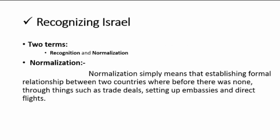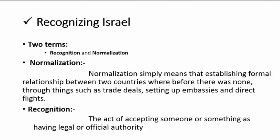Before starting the lecture properly, we have to understand two important terminologies. The first term is normalization. Normalization simply means establishing a formal relationship between two countries where before there was none, through things such as trade deals, setting up embassies, and direct flights. For example, Pakistan and India do not have a relationship with each other, but if they want to establish one through trade deals, direct flights, and embassies, this process is called normalization.